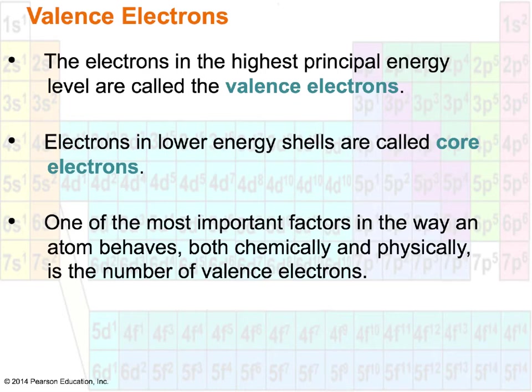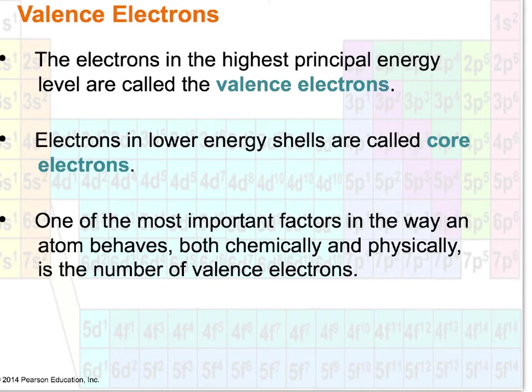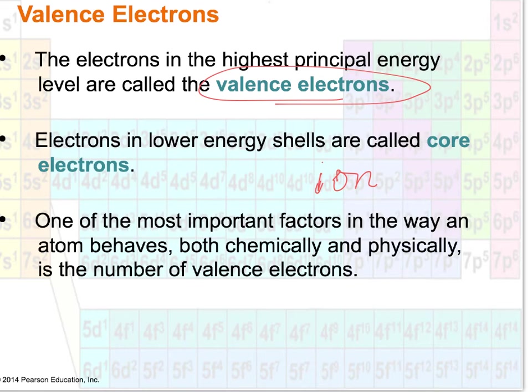An important concept before the end of this lecture: valence electrons. You've learned to draw electron configurations for neutral elements, but you'll also need to write them for ions. An ion is simply a charged particle, formed by either adding or taking away electrons. Typically it's the valence electrons — the electrons in the highest energy shell — that are involved when making an ion.